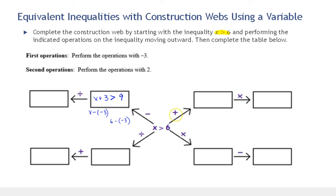Here we're adding negative 3 to both sides. So we have x plus negative 3 on the left and 6 plus negative 3 on the right. x plus negative 3 is the same as x minus 3, and on the right we have 6 plus negative 3 is 3.